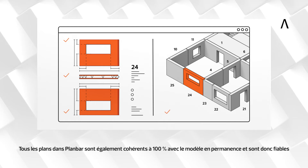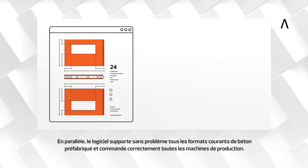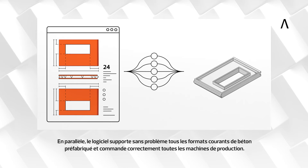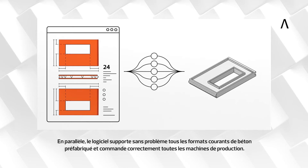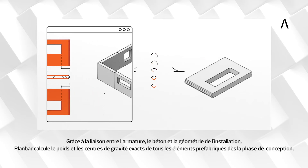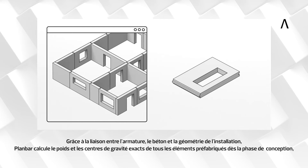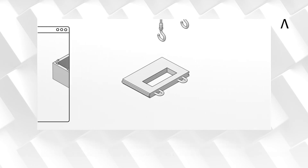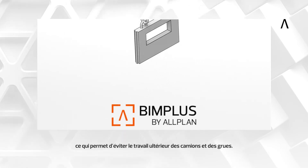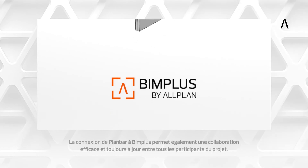At the same time, the software seamlessly supports all common precast concrete formats and correctly controls all production machines. Thanks to the linking of reinforcements, concrete, and fixture geometry, Plan Bar calculates the weight and exact centers of gravity of all precast elements while still in the planning phase, safeguarding subsequent truck and crane work.